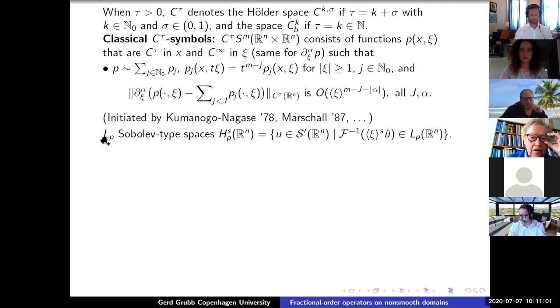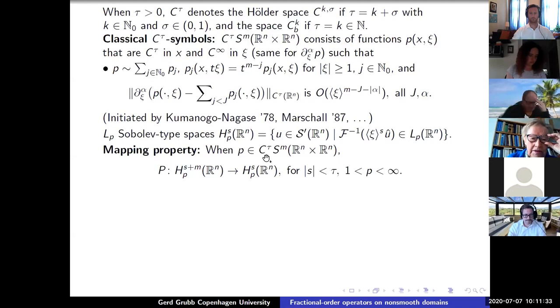Okay, so that's the symbols and now I need some spaces and I'll just fix the idea of focus on L^p type Sobolev spaces, those of the Bessel potential type where the elements are such that the Fourier transform multiplied by ⟨ξ⟩^s has an inverse in L^p. And so they extend the usual Sobolev spaces for integer s. Now, when you take a symbol in the C^τS^m class, then the operator it defines is continuous from H_p^{s+m} to H_p^s for s less than τ.